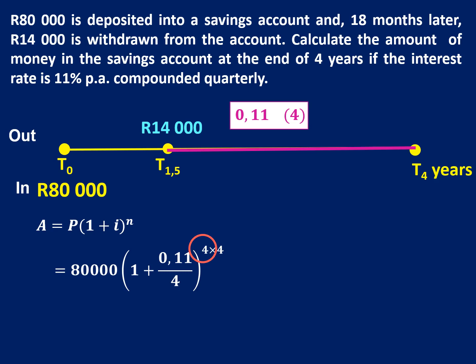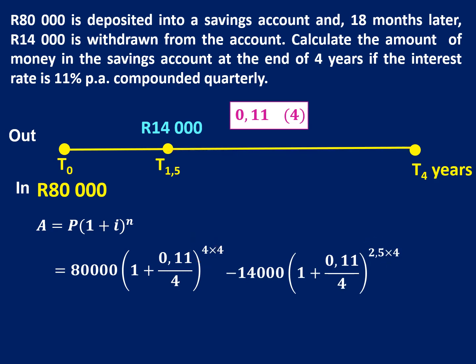How long is the R14,000 not going to be earning interest? It's not going to earn interest for two and a half years. So R14,000 comes out for two and a half years — that's the interest we are in effect losing on that money. If money is coming out, don't consider how long it was there in the first place; consider how much interest is being lost. Type it in exactly as you see it, and you should end up with a final answer of R105,117.64.